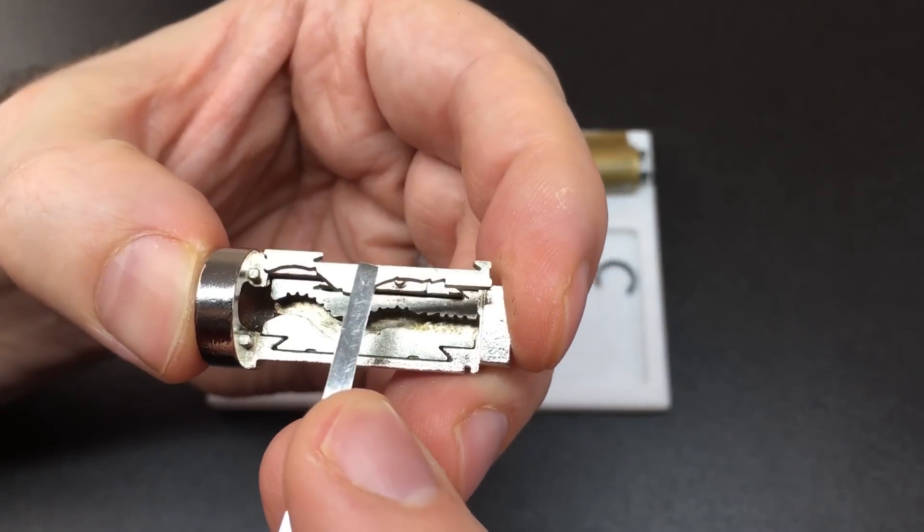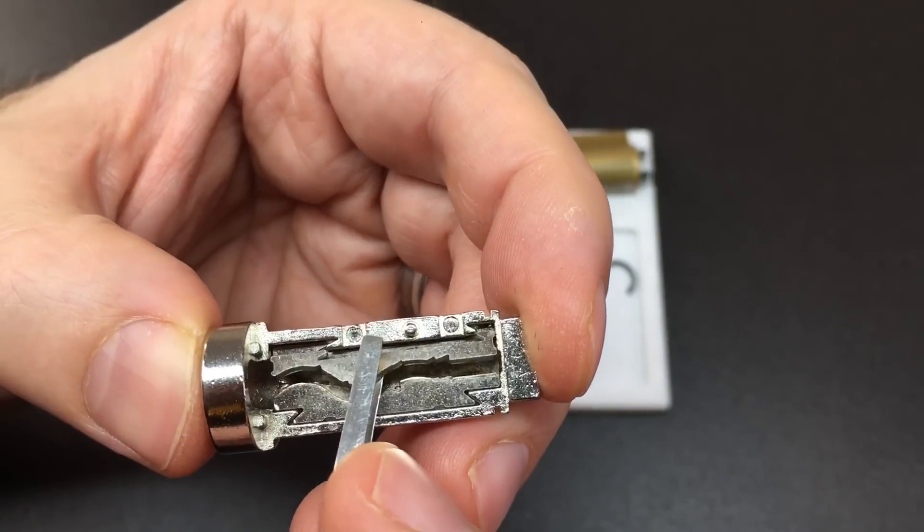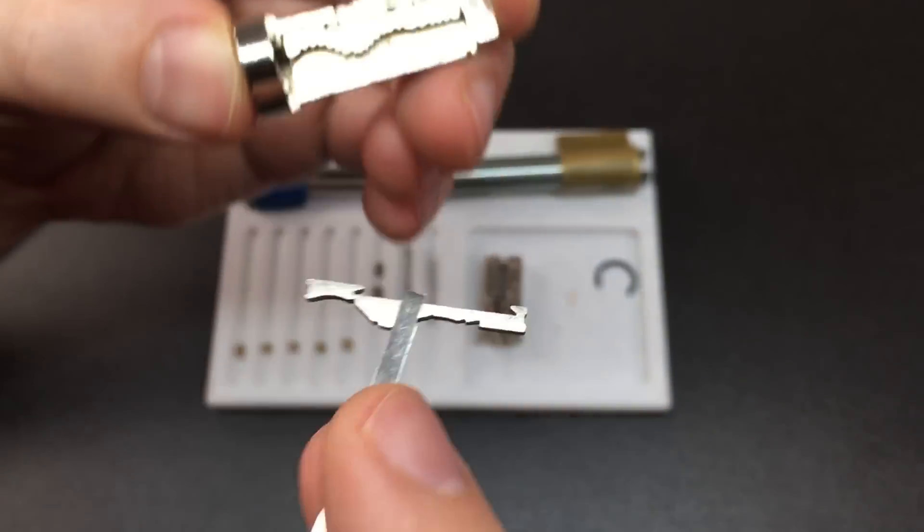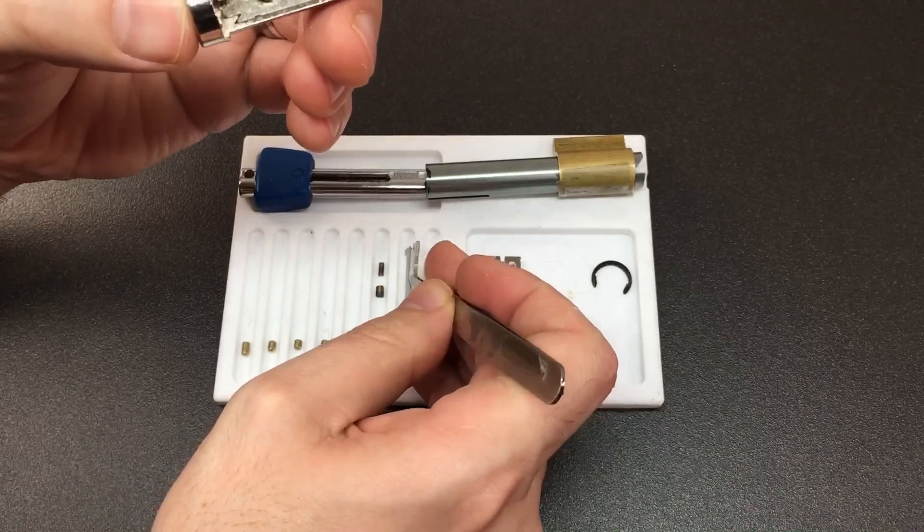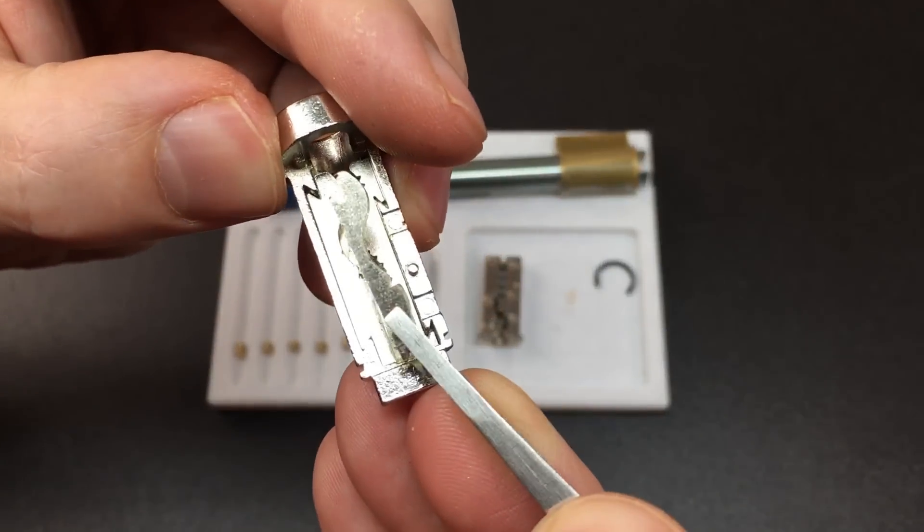And underneath those little plates are even more sections and again you can see quite clearly here how there are cutouts and grooves along each of these sections to try to ensure that any tools going inside will be caught up.